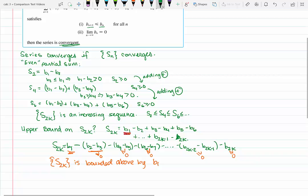So we've proven from this, we've proven that the sequence S sub 2k is convergent because we proved it was increasing and bounded above.